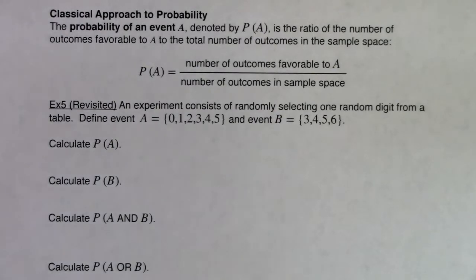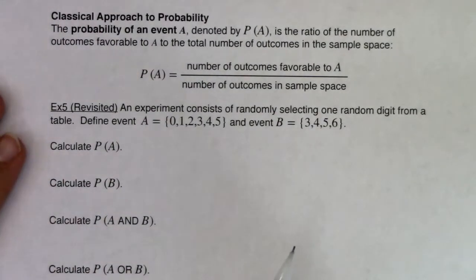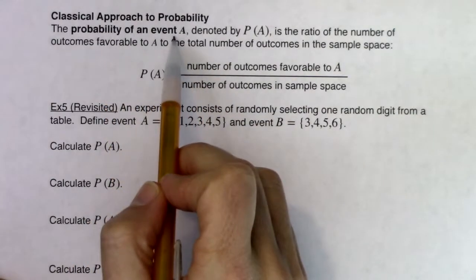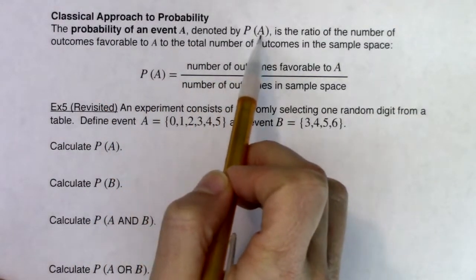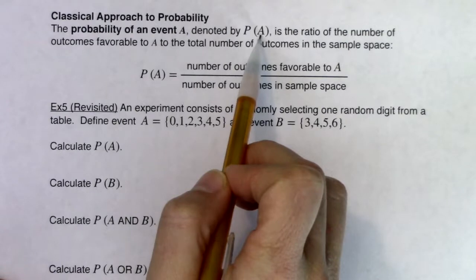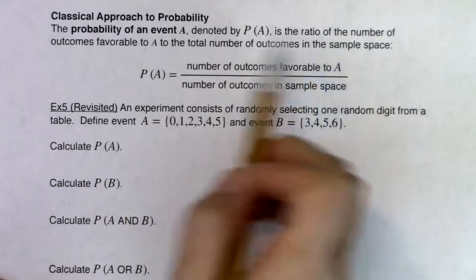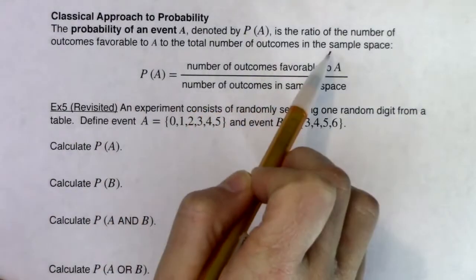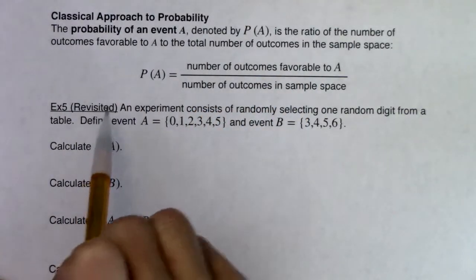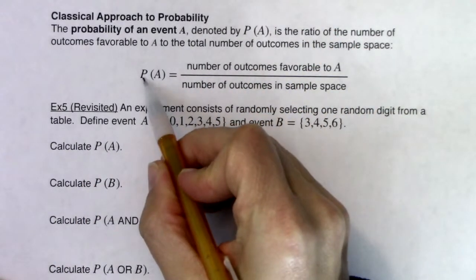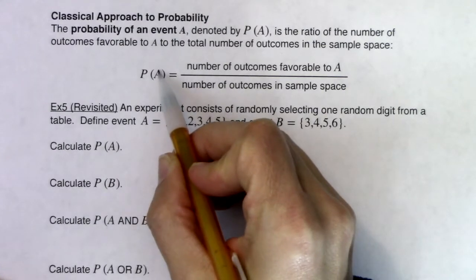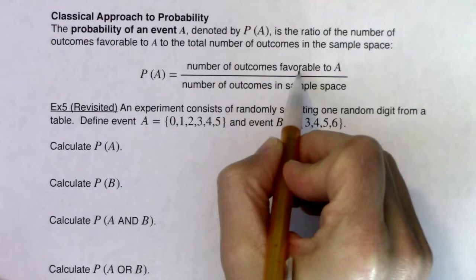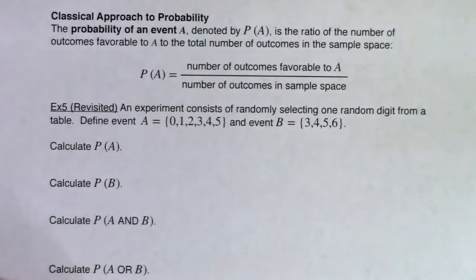We're going to start to dive into probability. The probability of event A, denoted P(A), is the ratio of the number of outcomes favorable to A to the total number of outcomes in the sample space. It's denoted P(A) equals the number of outcomes favorable to A over the number of outcomes in the sample space.